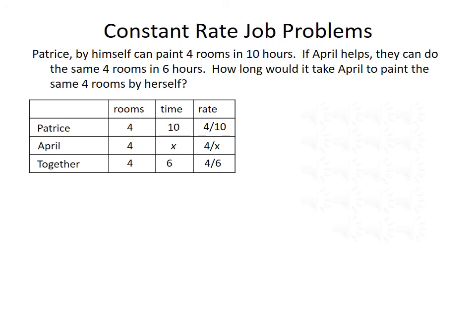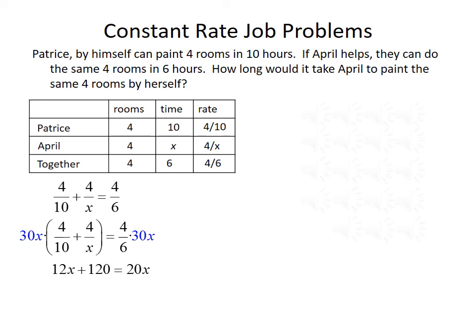We can form an equation based on these rates. If we add Patrice's rate to April's rate, we should get the rate it takes them to paint together. So our equation is 4 over 10 plus 4 over X equals 4 over 6. We want to solve this for X, so we'll multiply the entire equation by the least common denominator, 30X, in order to remove our fractions. When we multiply by 30X, the left-hand side becomes 12X plus 120, and the right-hand side becomes 20X.